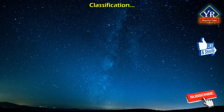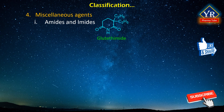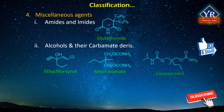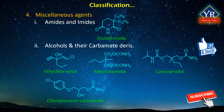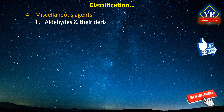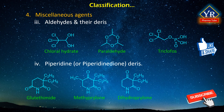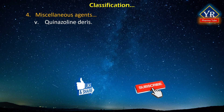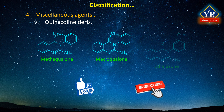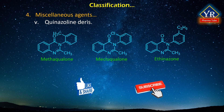The last class of sedative-hypnotics are miscellaneous agents. A wide range of chemical structures can produce sedation and hypnosis resembling those produced by the barbiturates. These include amides and imides such as glutethimide; alcohols and their carbamate derivatives, which include ethchlorvynol, meprobamate, carisoprodol, chlorphenesin carbamate, and methocarbamol; aldehydes and their derivatives, including chloral hydrate and paraldehyde; piperidine or piperidinedione derivatives such as glutethimide, methyprylon, dihydropyrilone, and ethypicone; and quinazoline derivatives such as methaqualone, methyloqualone, and ethinasone. All these classes of drugs will be discussed in detail in future classes.